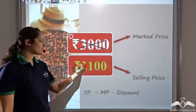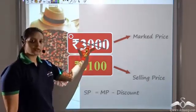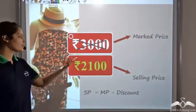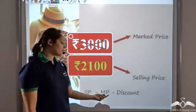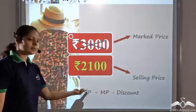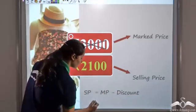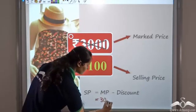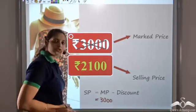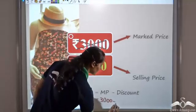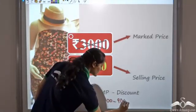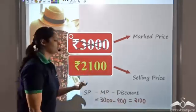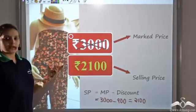So how we get the selling price: Marked price minus discount gives the selling price. The marked price was Rs.3000, and the gift voucher is a discount of Rs.900. So this gives Rs.2100, which is the selling price of this article.